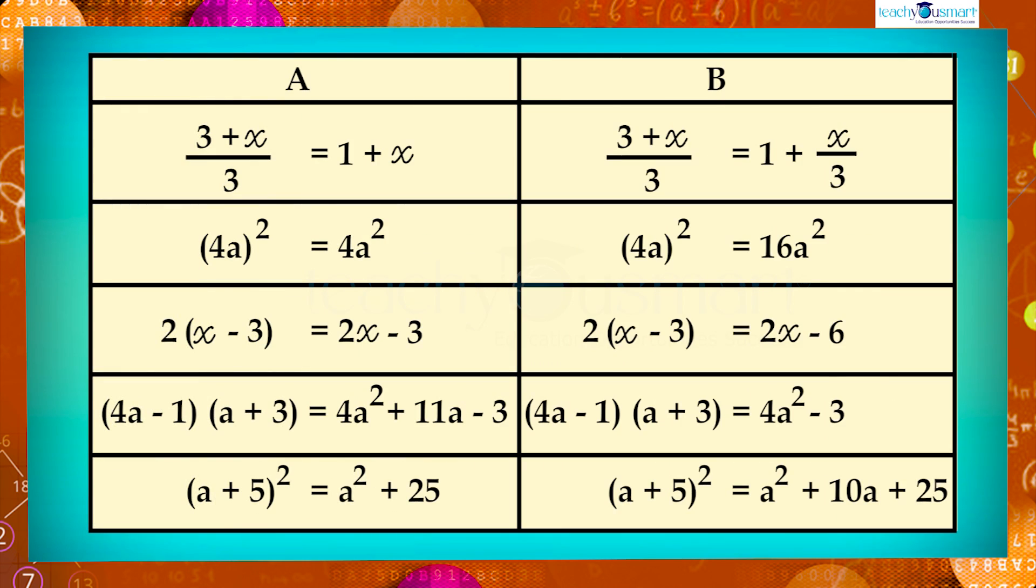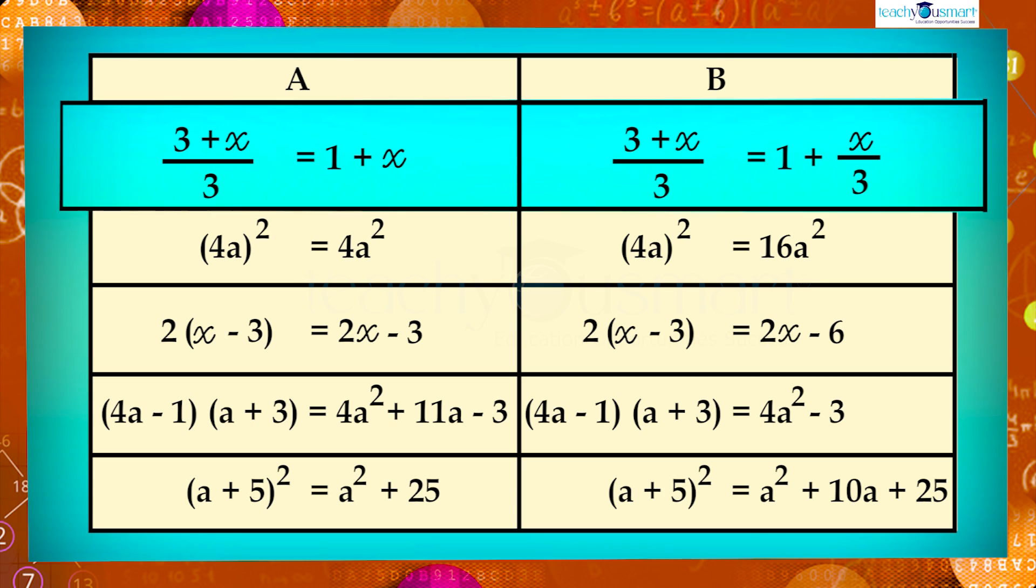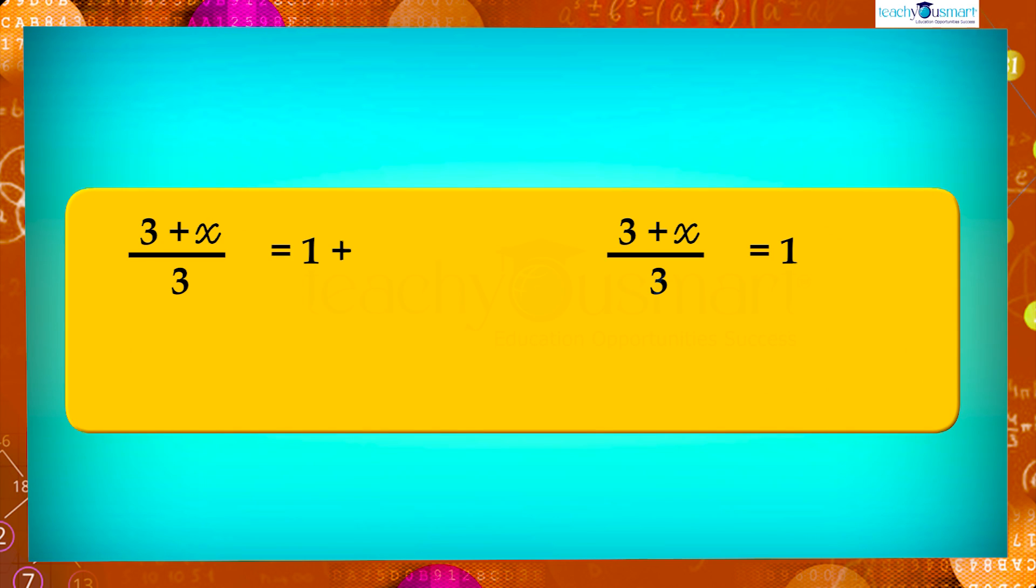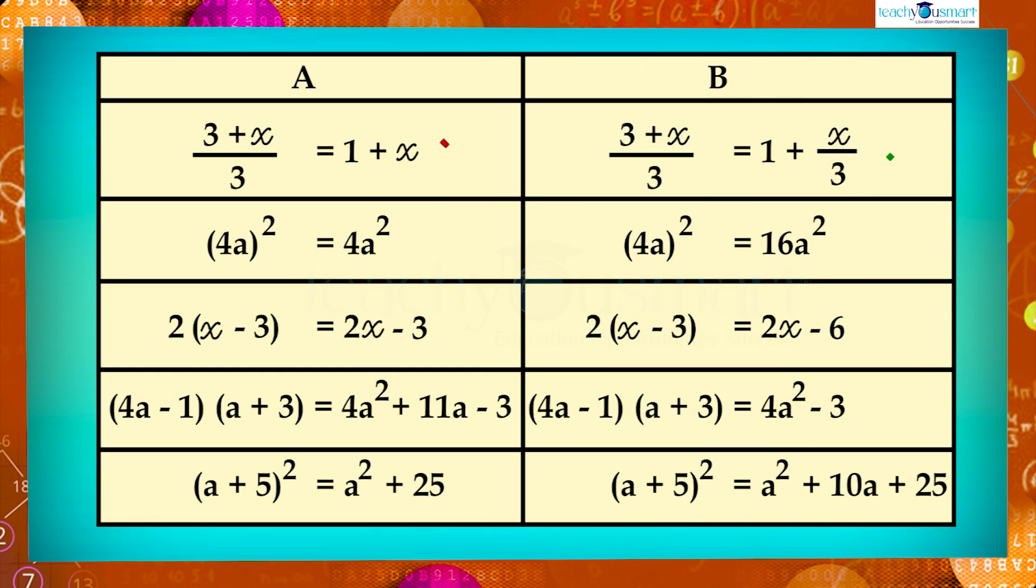Let's move our attention to another table. Consider 3 plus x whole divided by 3. We know that while dividing a polynomial by a monomial we divide each term of the polynomial by the monomial. That is, in 3 plus x whole divided by 3, the numerator has two terms, 3 and x. Therefore 3 plus x whole divided by 3 equals 3 by 3 plus x by 3, equals 1 plus x by 3. So B is correct.